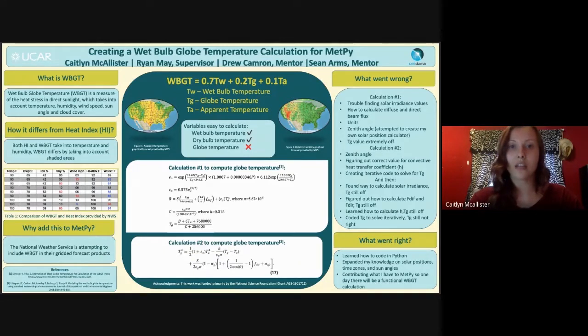NWS defines it as a measure of the heat stress in direct sunlight, which takes into account temperature, humidity, wind speed, sun angle, and cloud cover or solar radiation. This differs from the heat index, which takes into consideration temperature, humidity, and is calculated for shady areas.